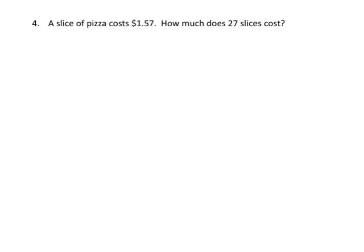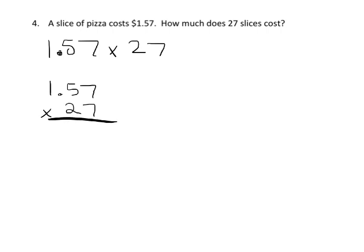All right, let's practice using a word problem. It says a slice of pizza costs $1.57. How much does 27 slices cost? Apparently you are buying pizza for a lot of friends. So we are going to multiply 1.57 times 27. All right. So let's set that up in that standard way. But we're going to multiply this guy by 100 so that we can turn it into a whole number.